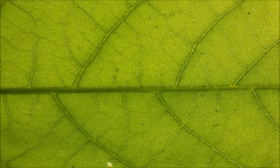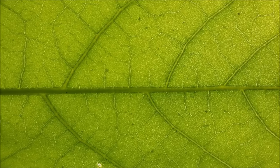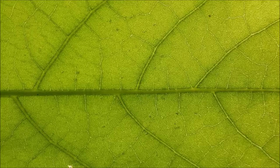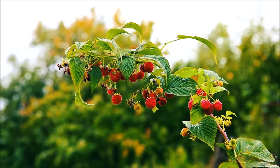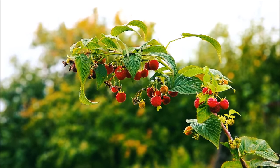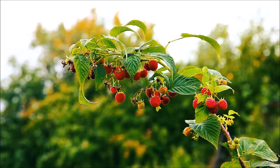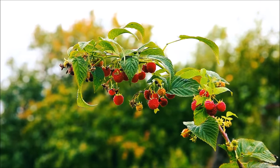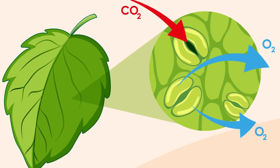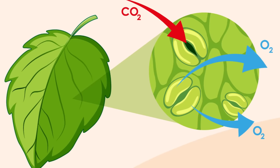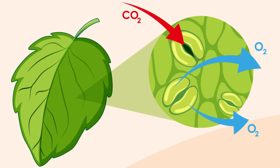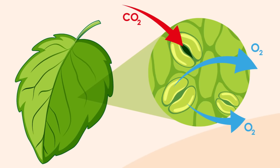Inside the leaves, the sunlight and water combine with the carbon dioxide to form glucose. Glucose is a type of sugar that plants use to grow and stay healthy. During photosynthesis, the plant also converts the carbon dioxide to oxygen, which it releases through its stomata back into the atmosphere.